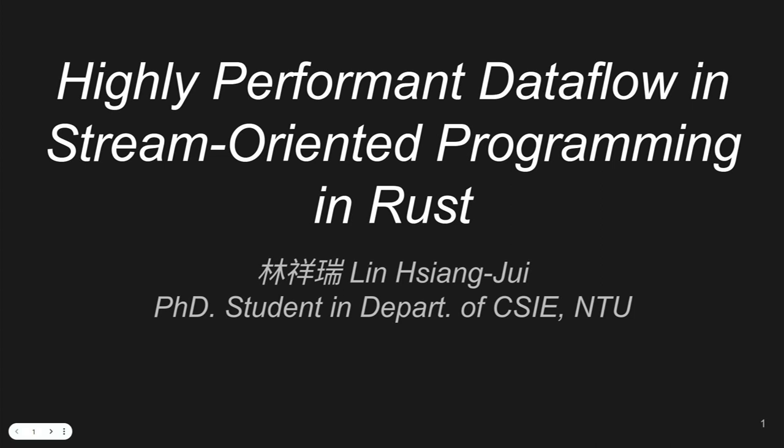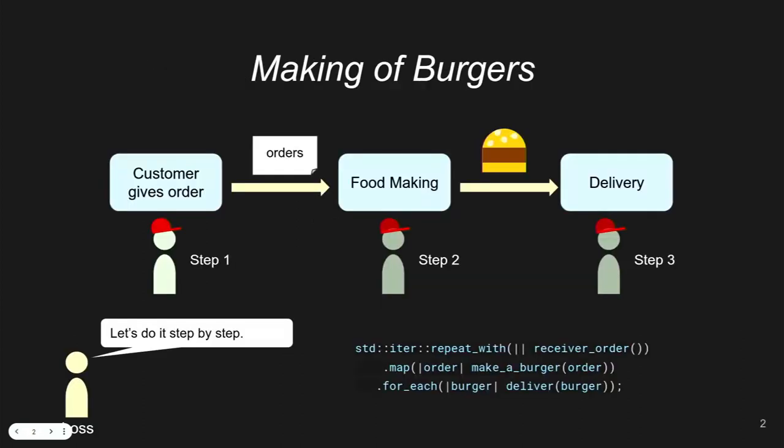Around that time, I noticed the Rust community had proposed a quite novel idea: using a unified syntax to solve the integration of IO and computation. That thing is Async. When Async was originally invented in Rust, it was designed to let you write code that handles massive IO in a very simple and convenient way, including computation-heavy tasks.